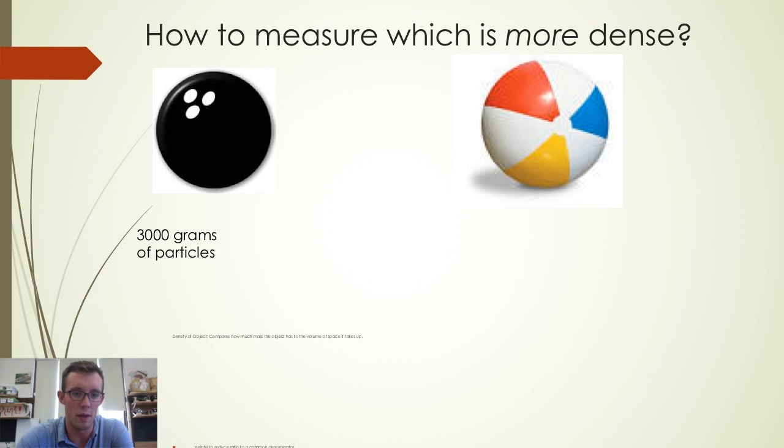Let's say our bowling ball has 3,000 grams of particle mass and those particles take up a thousand milliliters of space, whereas the beach ball has 500 grams of mass and it takes up a thousand milliliters of space.